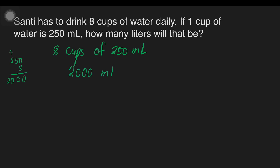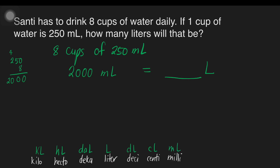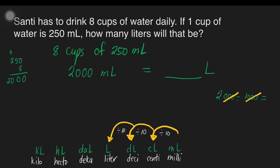So, this 2,000 ml, we will convert it into liters. It is best to put a guide at the bottom of our solution. We start with kiloliters, hectoliters, decaliters, liter, deciliter, centiliters, and milliliters. Let's identify how many steps from milliliters to liters — that is 1, 2, and 3. That is divided by 10, divided by 10, and divided by 10. Now, we can divide 2,000 by 1,000. Where did we get 1,000? That is from the 3 steps: 10 times 10 times 10. We can also do cancellation here. That will give us 2 liters.